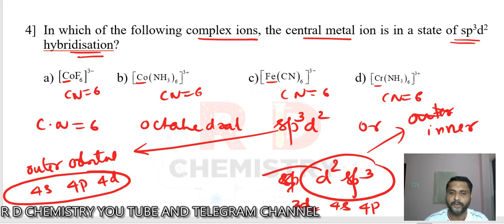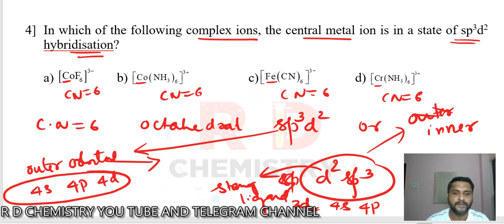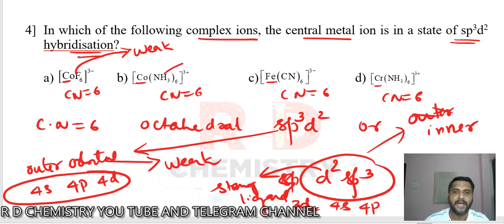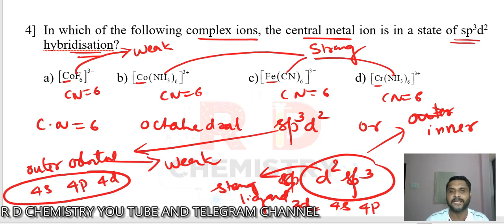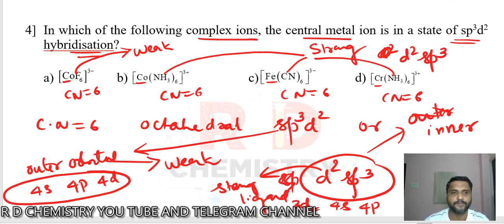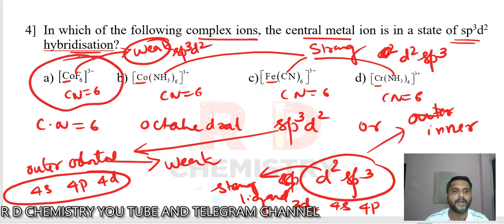Remember: the inner orbital complex forms when strong ligands are present; the outer orbital complex forms when weak ligands are present. Halogens (fluorido) are weak field ligands; amine and cyanido are strong ligands. Whenever strong ligands are present, electron pairing takes place according to CFT. Therefore options with strong ligands have D2SP3 hybridization. Fluoride is a weak ligand, so inner orbitals are not used — it undergoes SP3D2 hybridization. The answer is option 1.